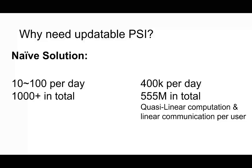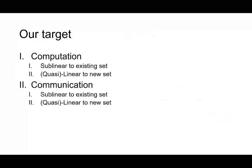A naive solution would incur quasi-linear computation and linear communication per user per query. So it means that for each query of contact tracing, it needs to download hundreds of megabytes from the server. Our target is reduce both computation and communication, and it will be sub-linear to the existing set and quasi-linear to the new set.